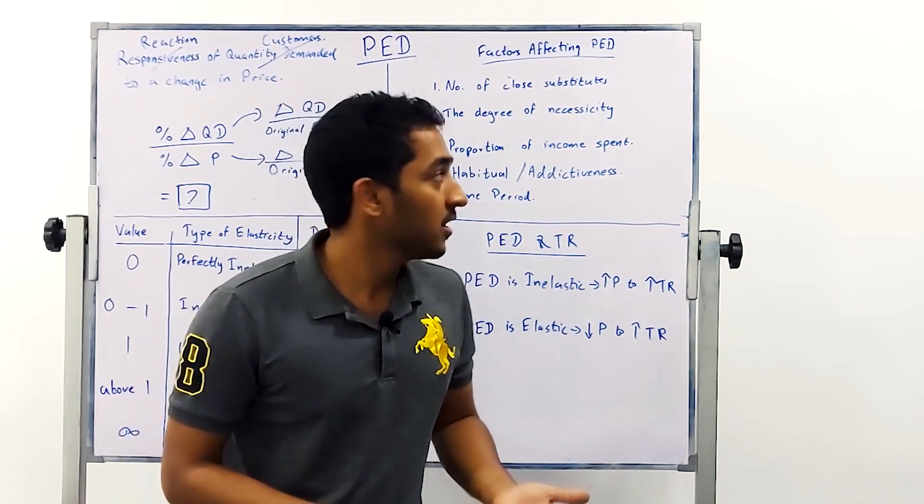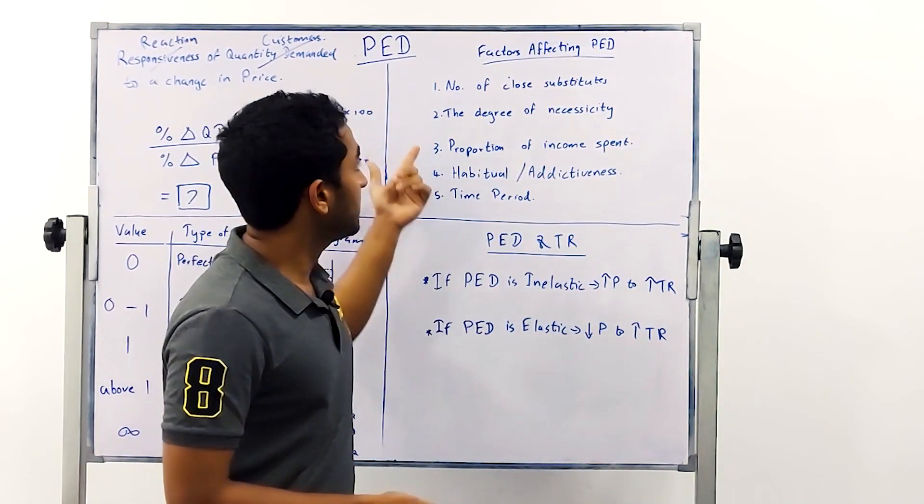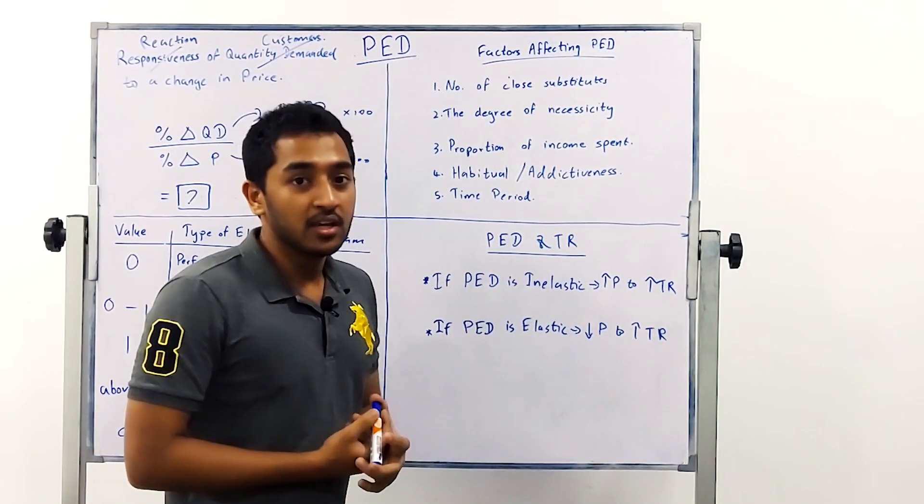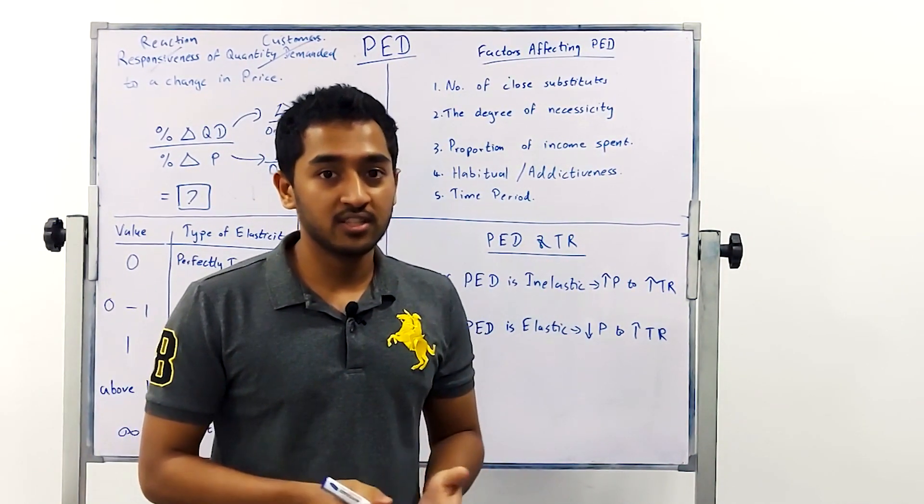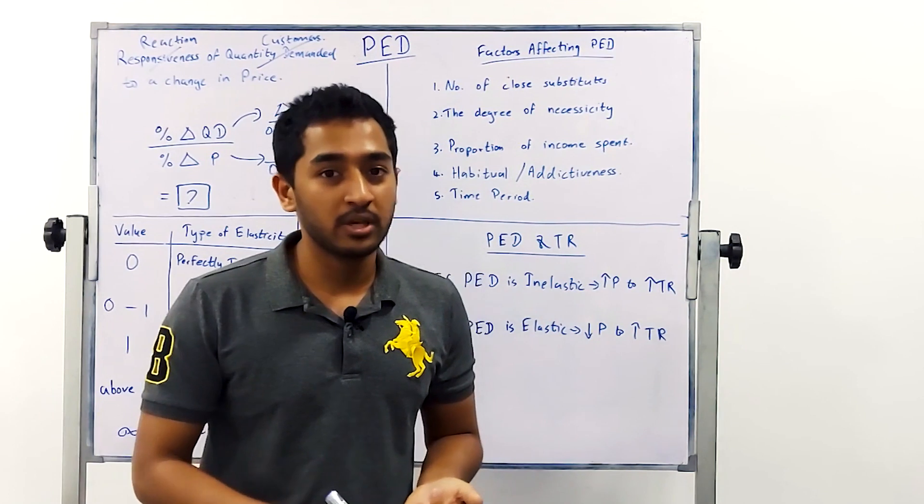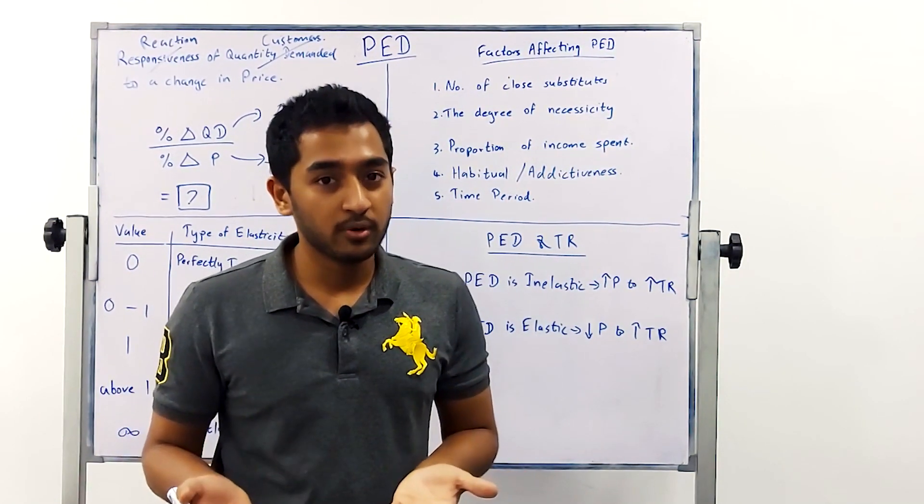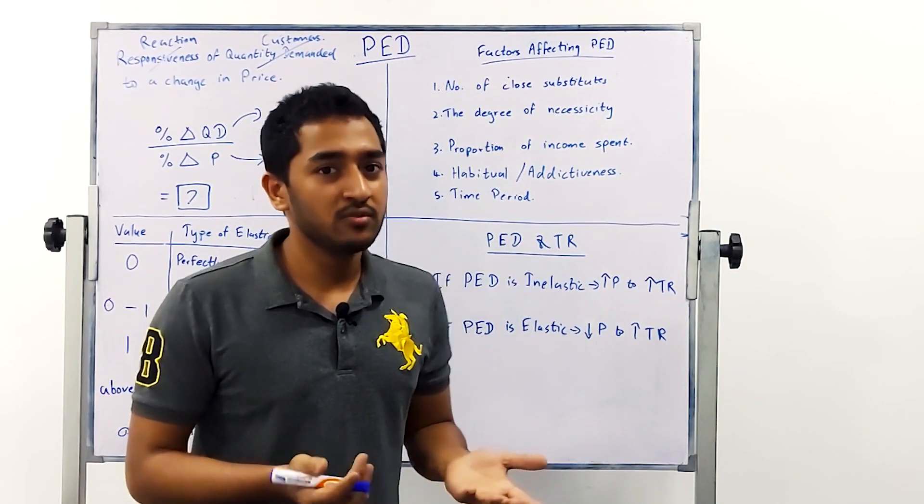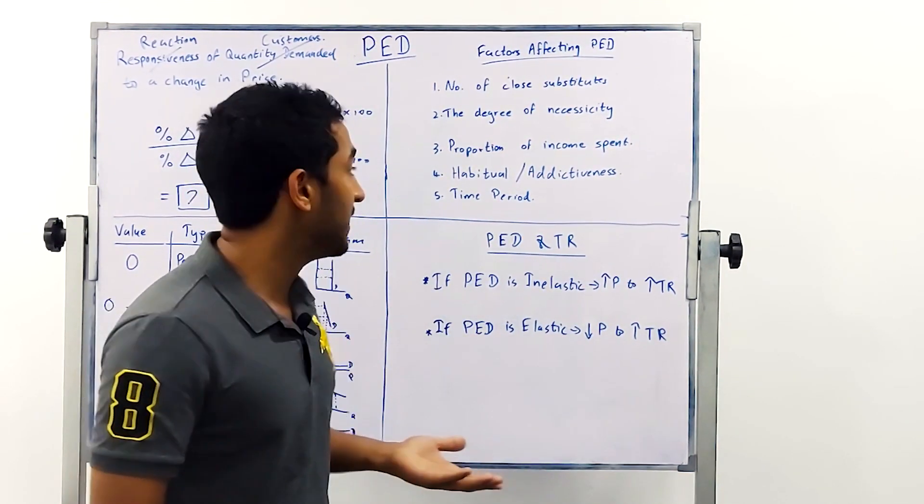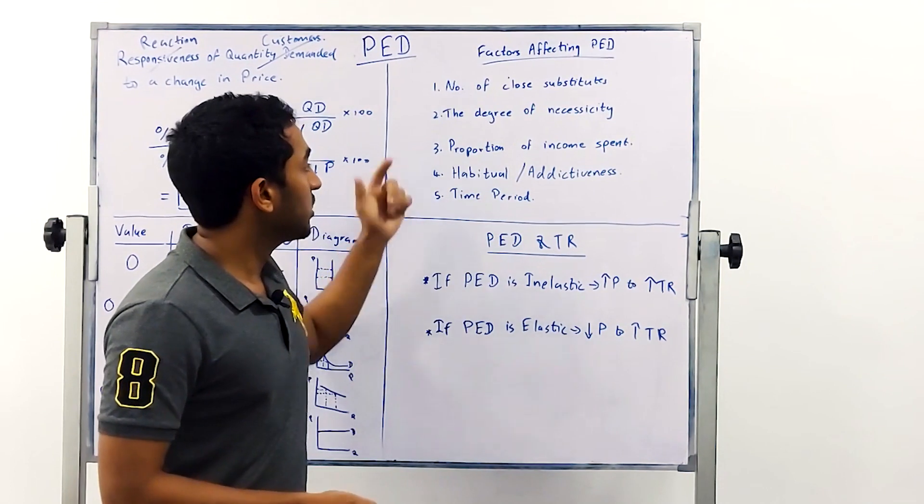The next one is a degree of necessity. If you have a product that has a high degree of necessity maybe rice maybe oil maybe bread, so if you change your price people are unlikely to leave you. Maybe a few customers leave you so it renders you inelastic.